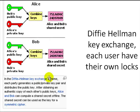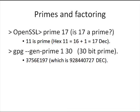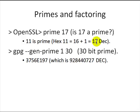Let's look at some number theory tools for encryption. One package you can use is OpenSSL — download and install it; it has commands for factoring, primes, and more. For example, you can type 'openssl prime 17' to check if 17 is prime. Note that most software uses hexadecimal numbers. You can also use GPG (GNU Privacy Guard), a program for public key encryption, decryption, and signing. To generate a prime number, you specify the bit size — for example, a 30-bit prime — and it prints the result in hexadecimal, which you convert to decimal.